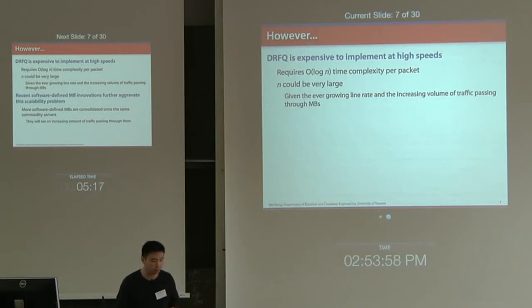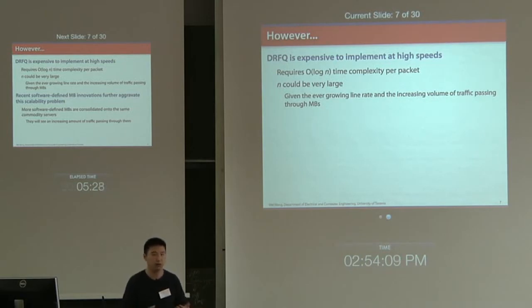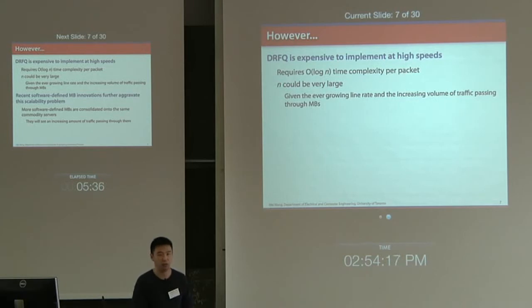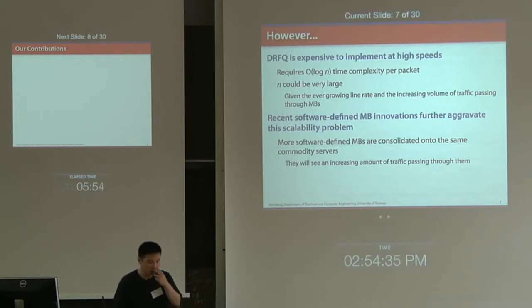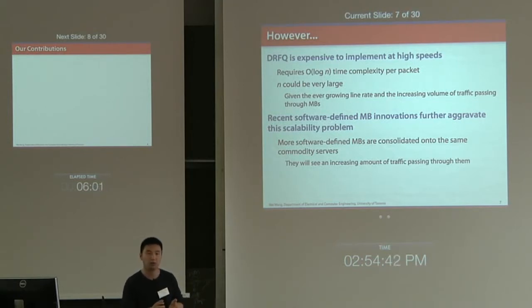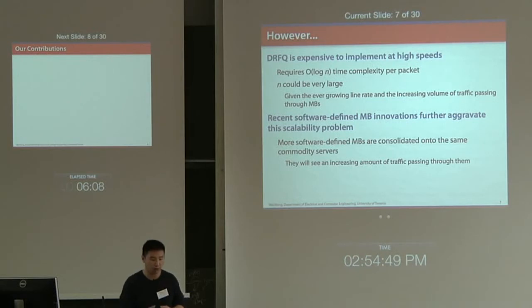The log n figure is just a theoretical lower bound; actual implementation complexity could be even higher because we need to maintain complicated data structures, making it hard to implement in hardware or software. The number of traffic flows can be very large, and the recent software-defined middlebox innovations may further exacerbate this scalability problem. More and more software-defined middleboxes will be consolidated onto the same commodity servers, resulting in an increasing amount of traffic passing through them.